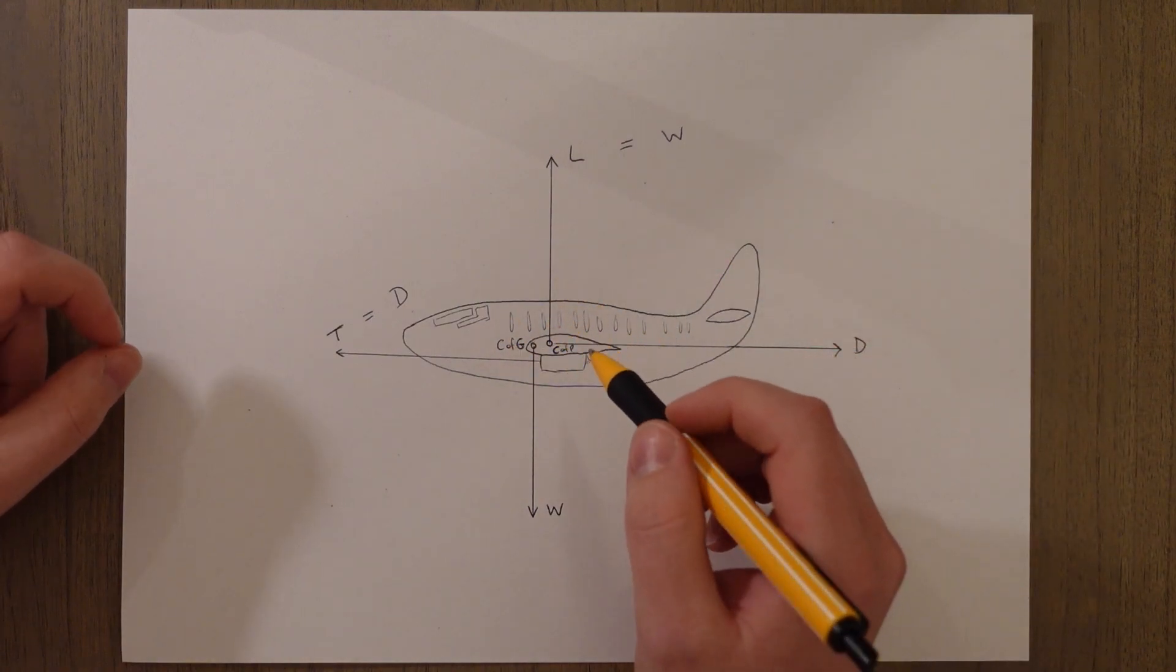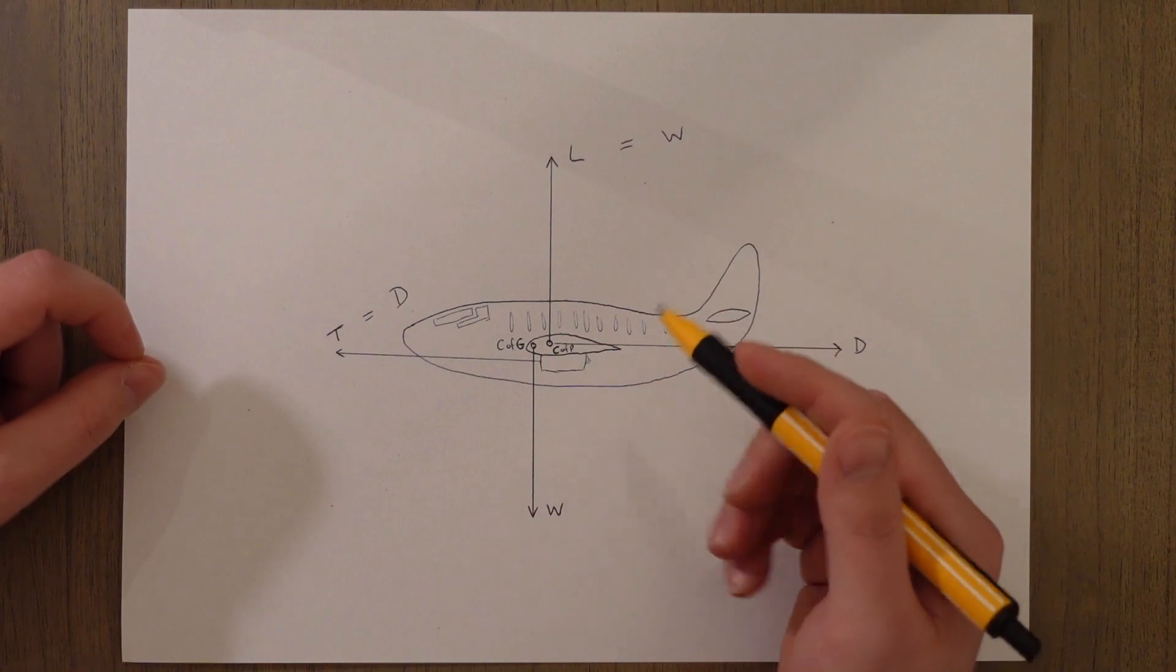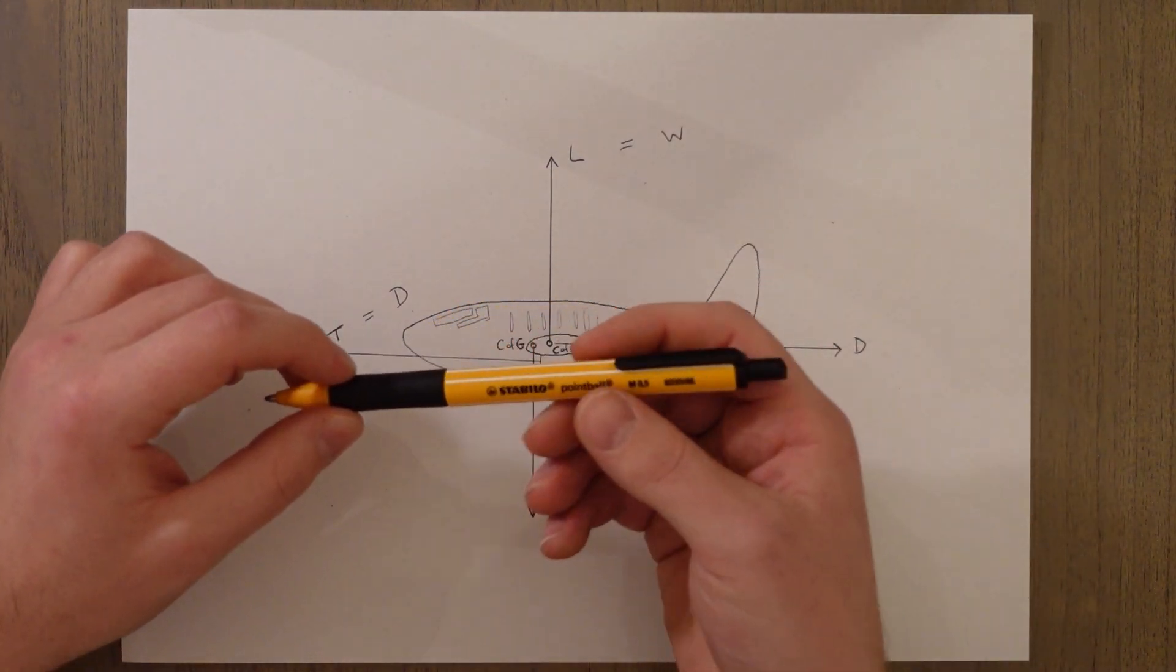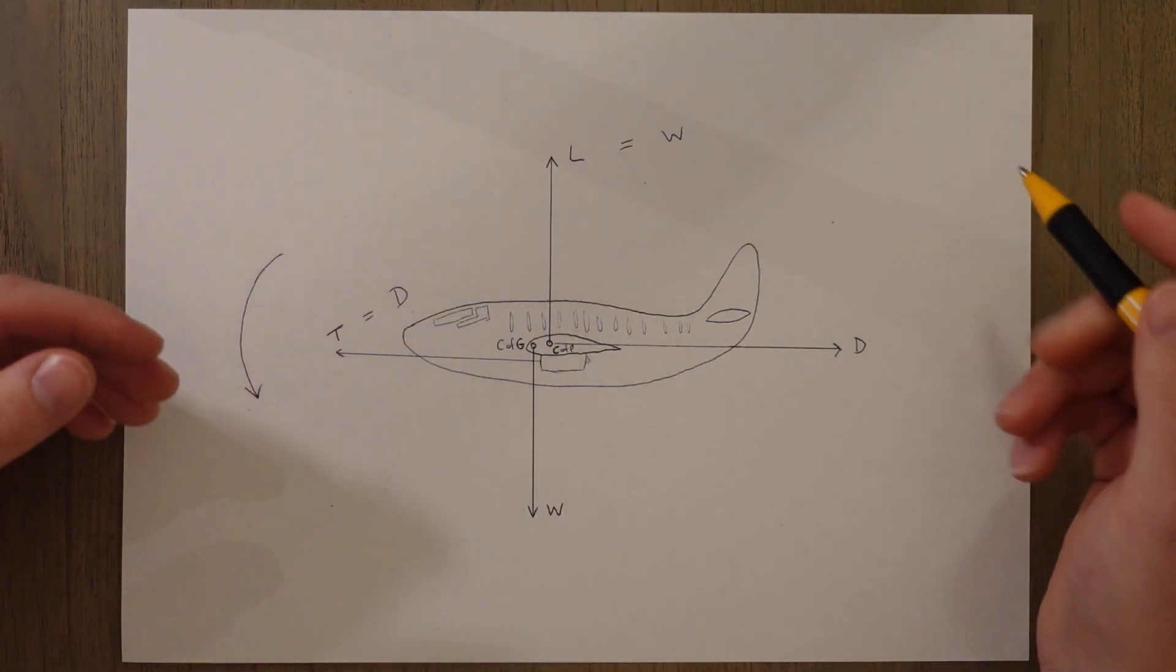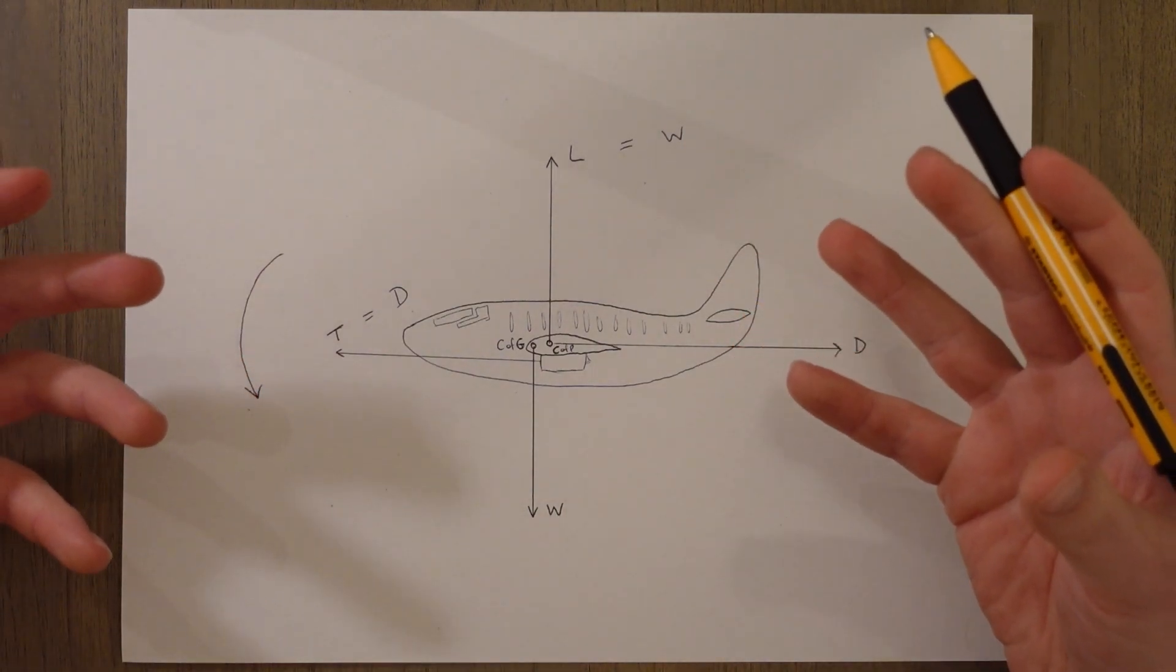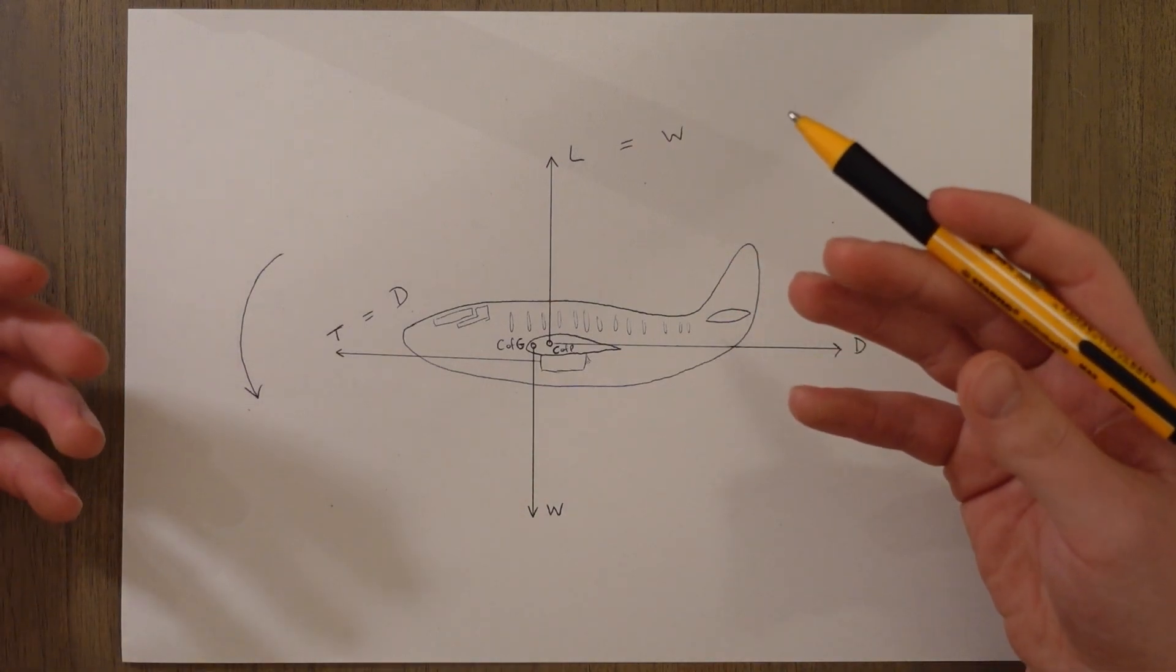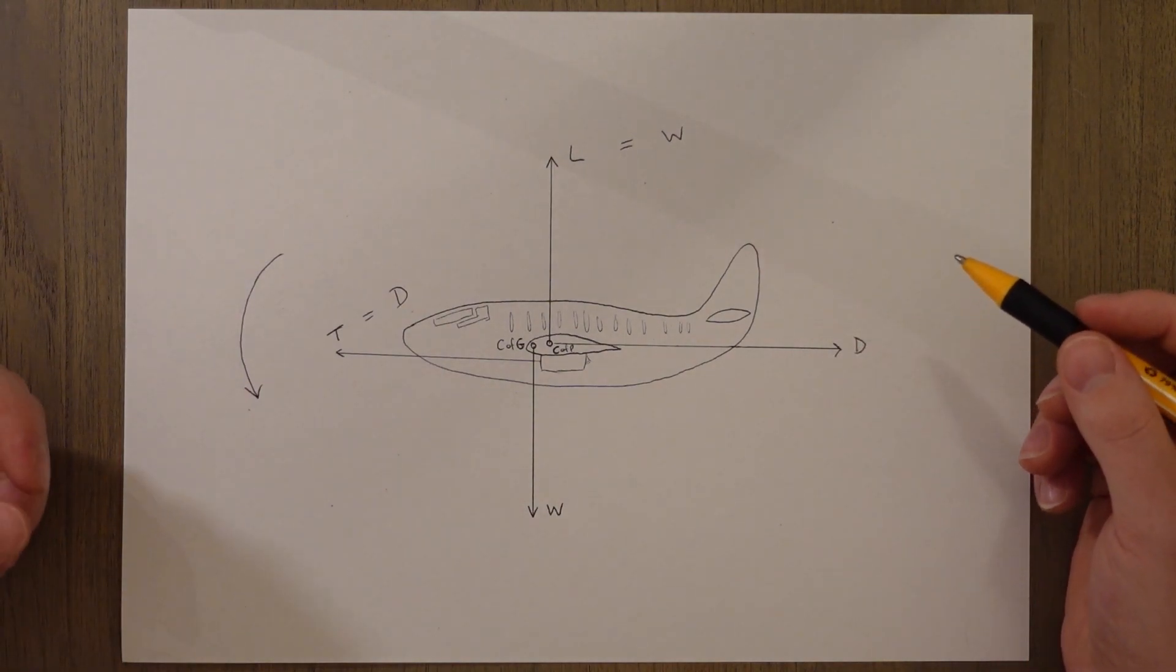As you can see from this diagram the center of gravity is in front of the center of pressure. This means that the lift pulls the aircraft up from behind the center of gravity and causes a downward pitching moment. This arrangement is normal for commercial transport planes as it is quite good for stability.